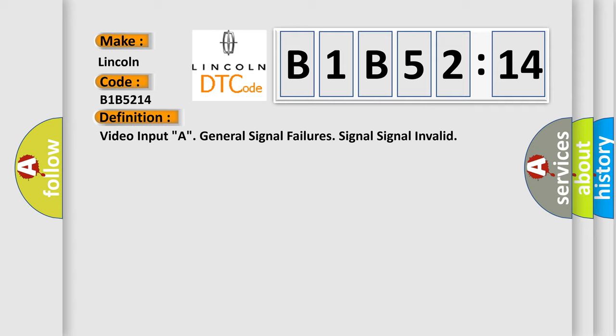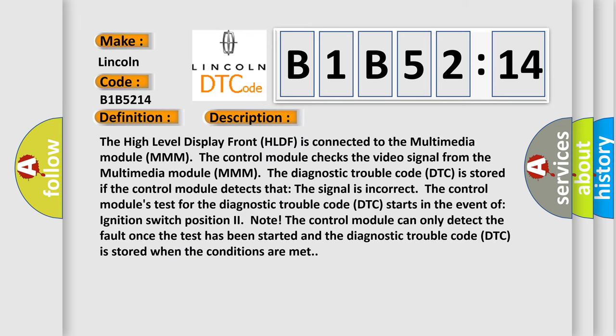And now this is a short description of this DTC code. The high level display front HLDF is connected to the multimedia module MMM. The control module checks the video signal from the multimedia module MMM. The diagnostic trouble code DTC is stored if the control module detects that the signal is incorrect. The control module's test for the diagnostic trouble code DTC starts in the event of ignition switch position two. The control module can only detect the fault once the test has been started and the diagnostic trouble code DTC is stored when the conditions are met.